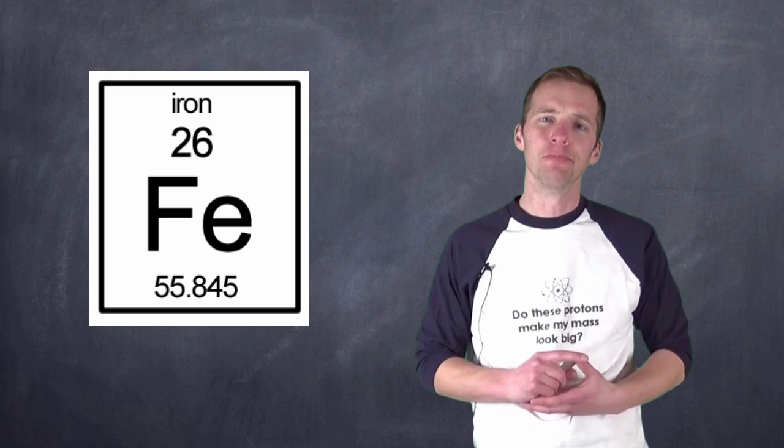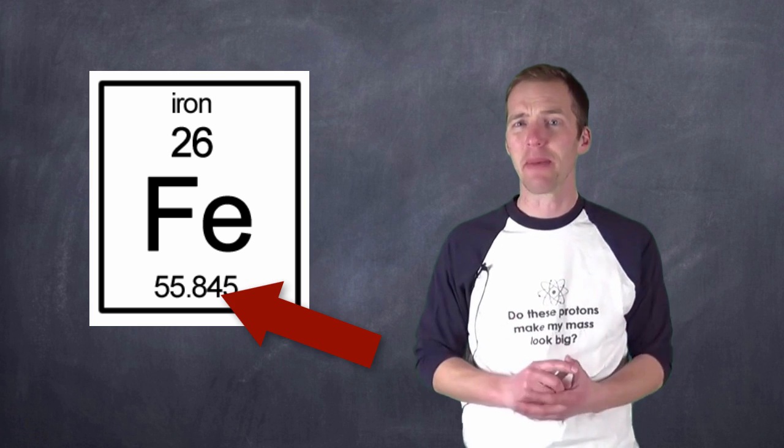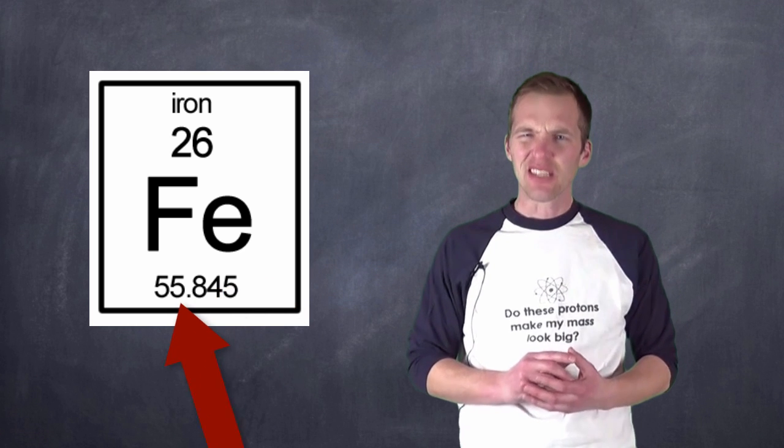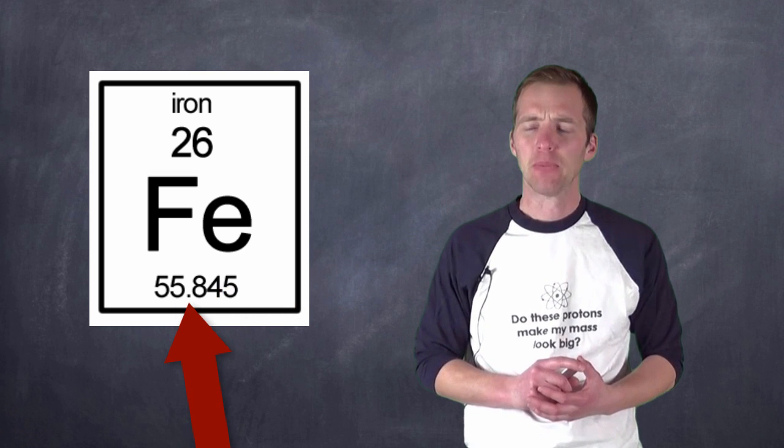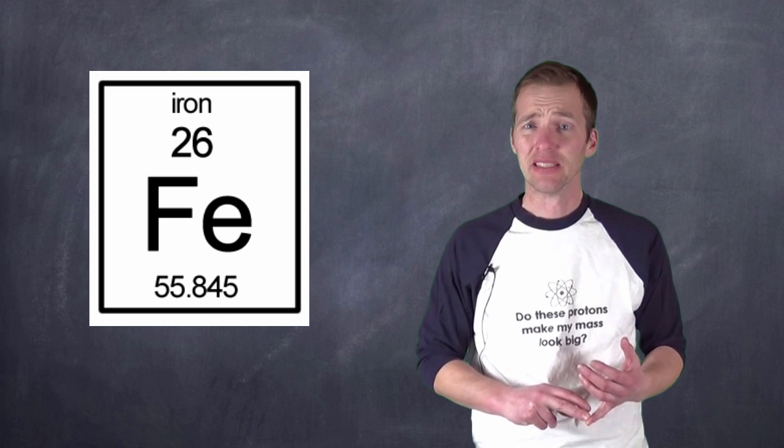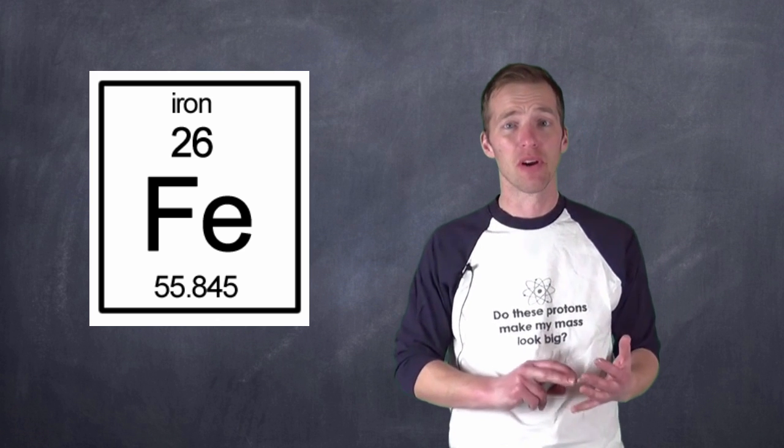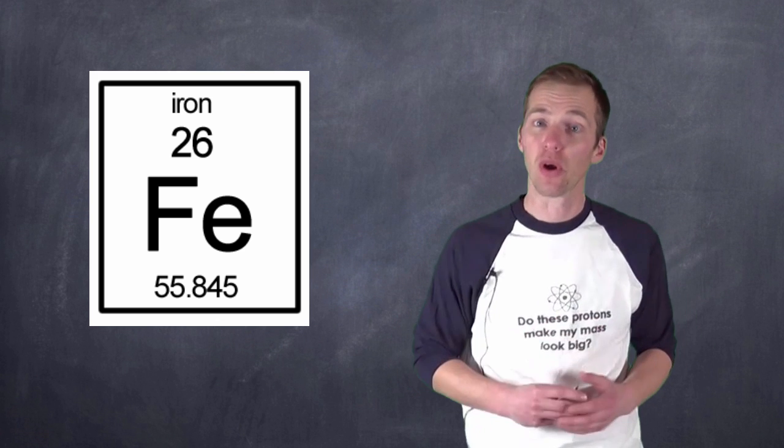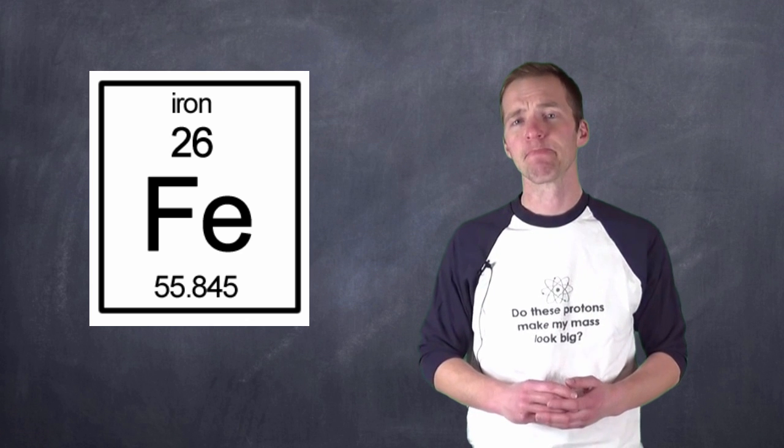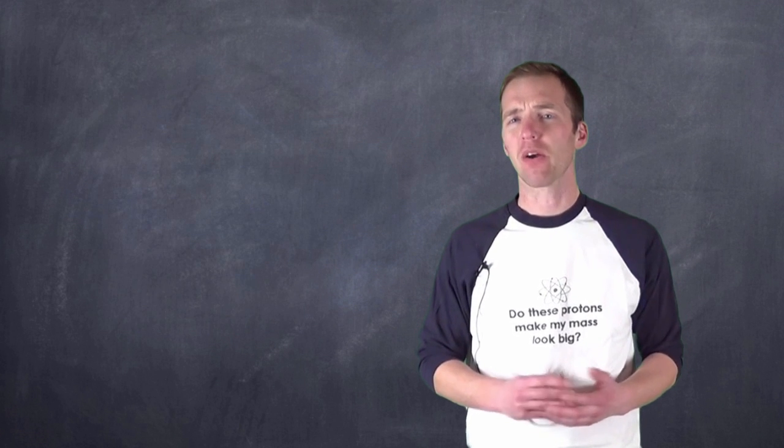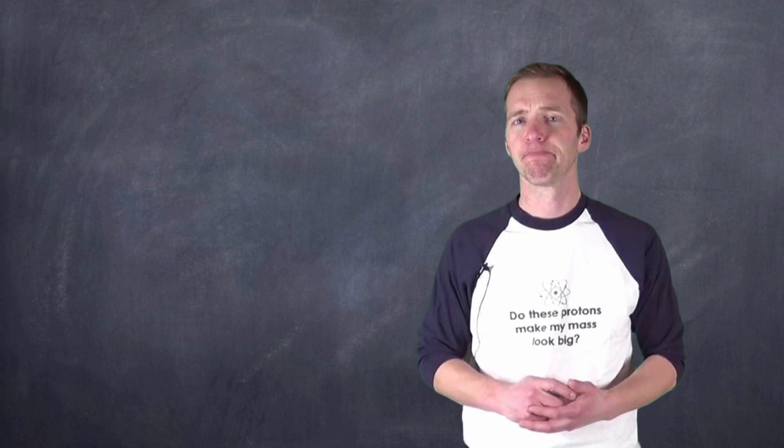But if we take a look down below, and we take a look at what we assume is the mass number, there's decimals there. Well, if that number is representing the mass number, which is the number of nucleons, protons and neutrons, that are in a particular element, hmm, how can we have decimal places? That's a good question.